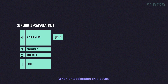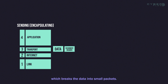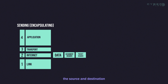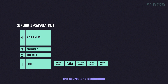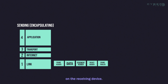When an application on a device wants to send data to another device, it sends the data to the transport layer, which breaks the data into small packets. The transport layer then sends the packets to the internet layer, which adds the source and destination IP addresses to the packets. The internet layer then sends the packets to the link layer, which adds the source and destination MAC addresses to the packets and transmits them over the network.